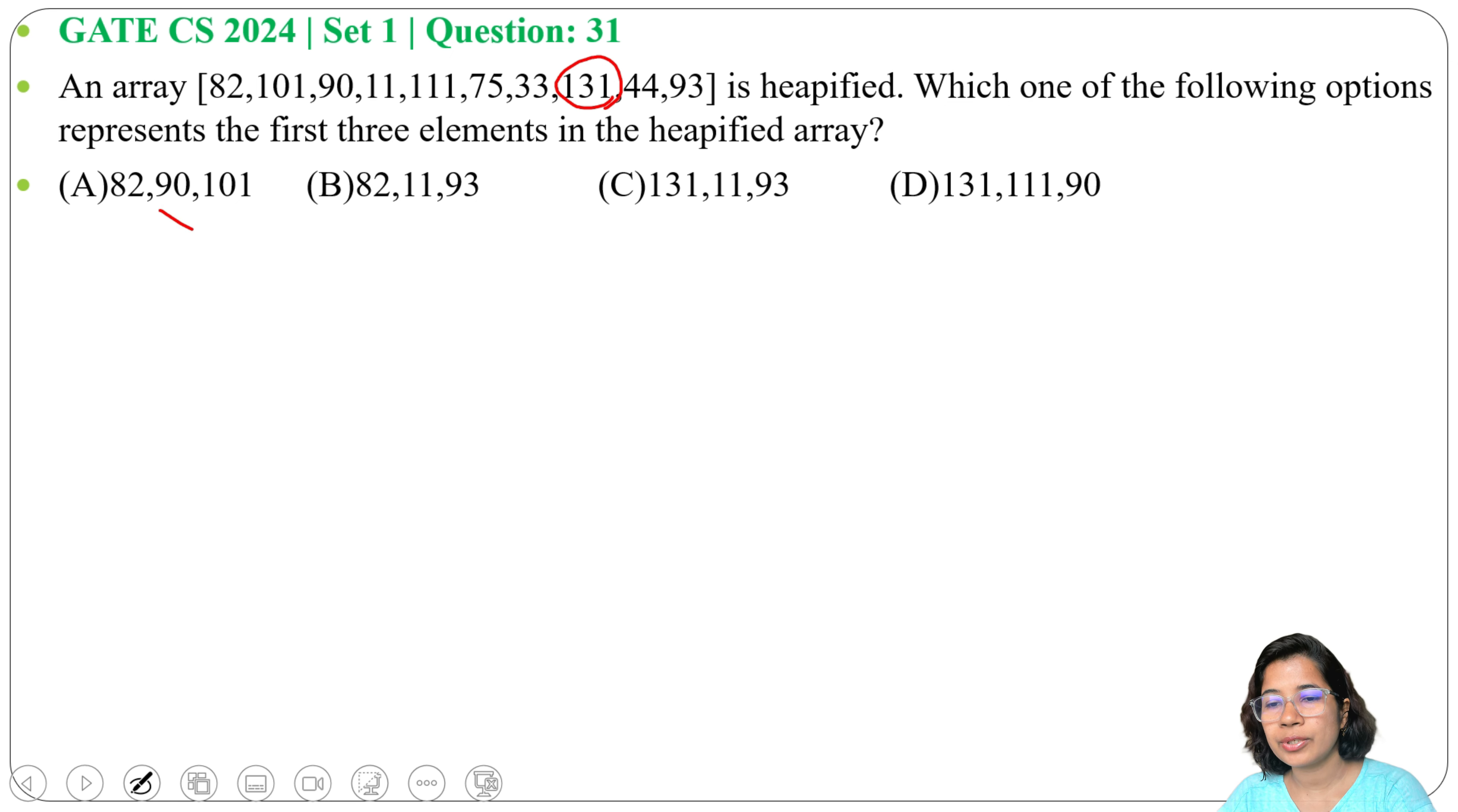In option A and option B, 82 is the first element. This is wrong, so option A and option B are ruled out. Now option C and option D have 131 as the first element.